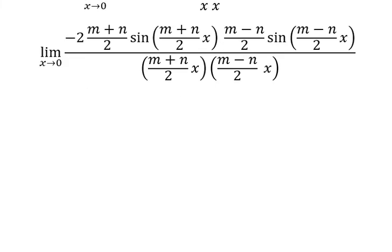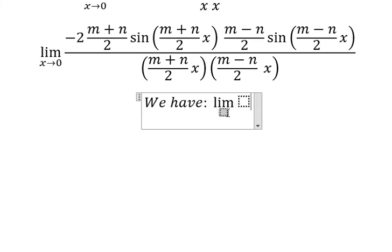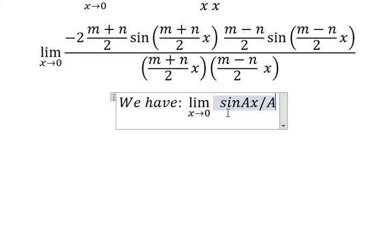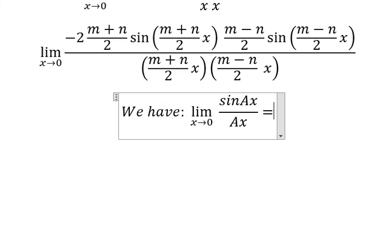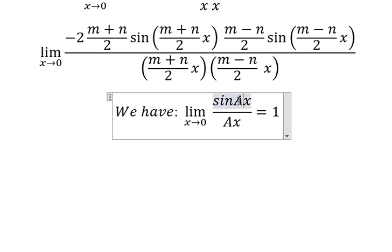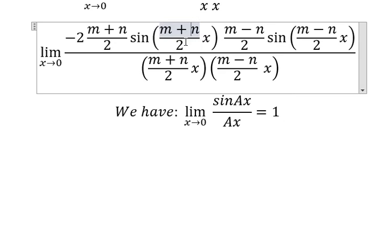Next, we have the formula in here. So capital A in here represents m plus n over 2 and m minus n over 2.